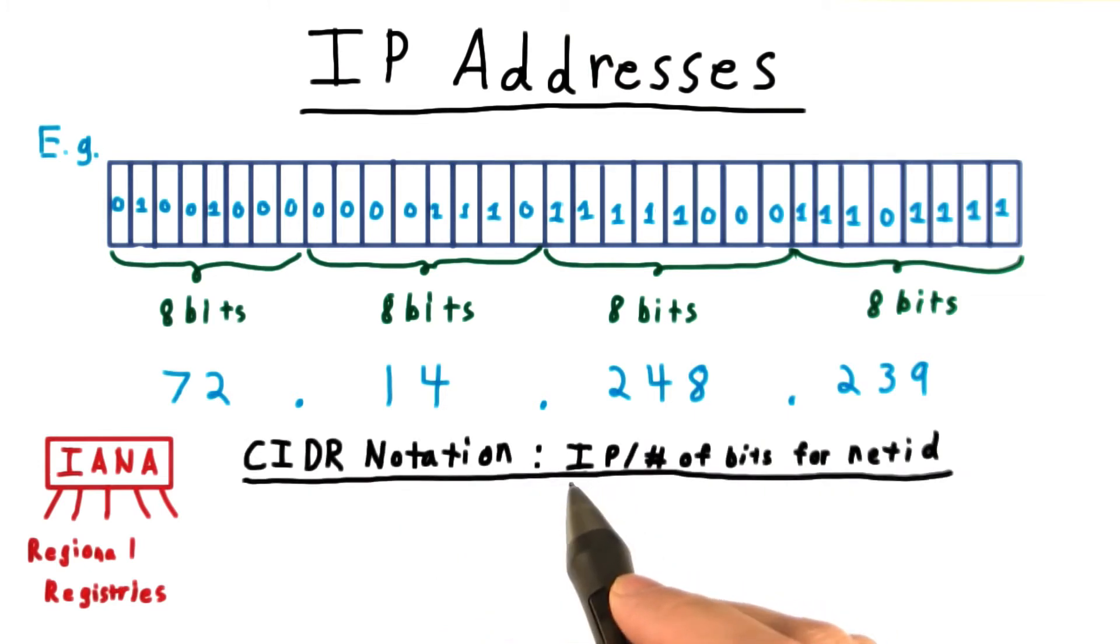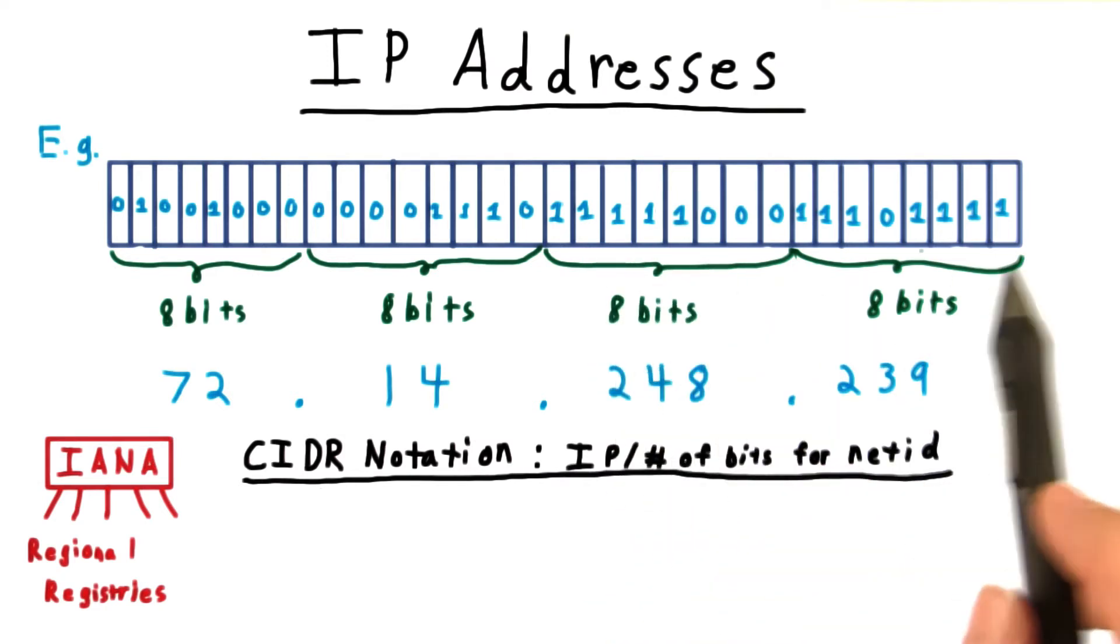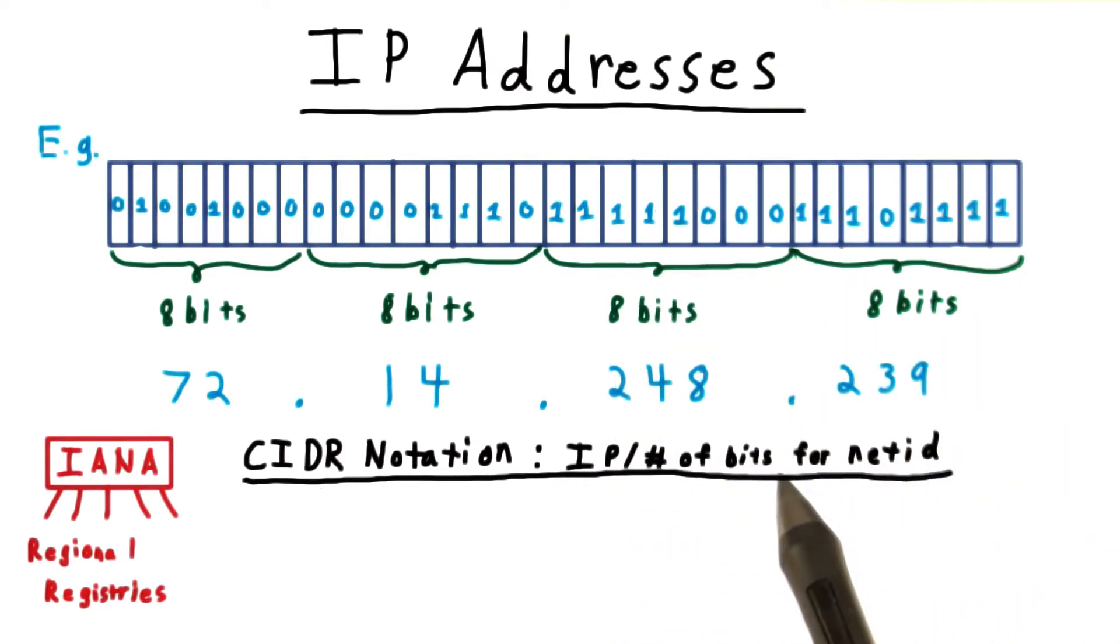The ranges themselves are commonly specified by a 32-bit IP, followed by a slash, and then the number of bits understood to specify the network ID. This is referred to as CIDR notation. The first number of these bits specify the range, and then the rightmost bits specify the particular host.